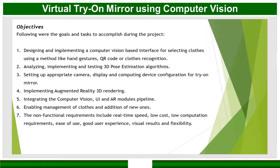The fifth objective was to integrate the UI part, the computer vision part, and the AR part together using inter-process communication. The non-functional requirements of the project: we had to achieve real-time speed, it had to be low cost, computationally inexpensive, the visual results should be good, and the product should be flexible in terms of future prospects and usage.